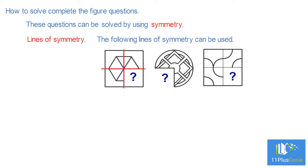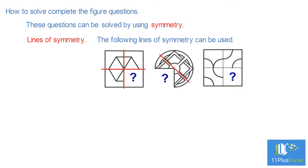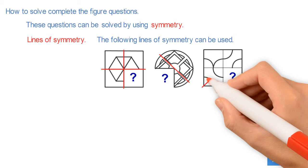In this diagram, this oblique line is the line of symmetry. The last line of symmetry you must be able to use is this line.